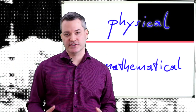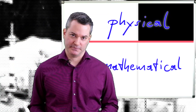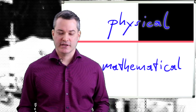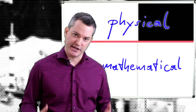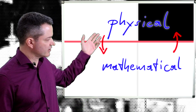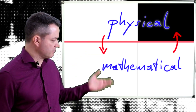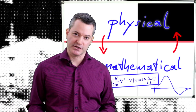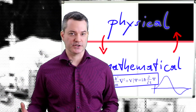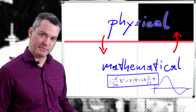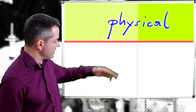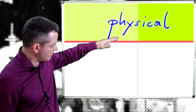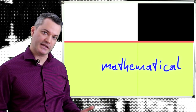The tools used to make physical predictions are mathematical. A physical theory, therefore, must tell us how to connect our observations of the physical world to specific mathematical objects like numbers, equations, and the solutions of these equations. We will represent the physical world by the upper half of the whiteboard; on the lower half, we will place mathematical objects.